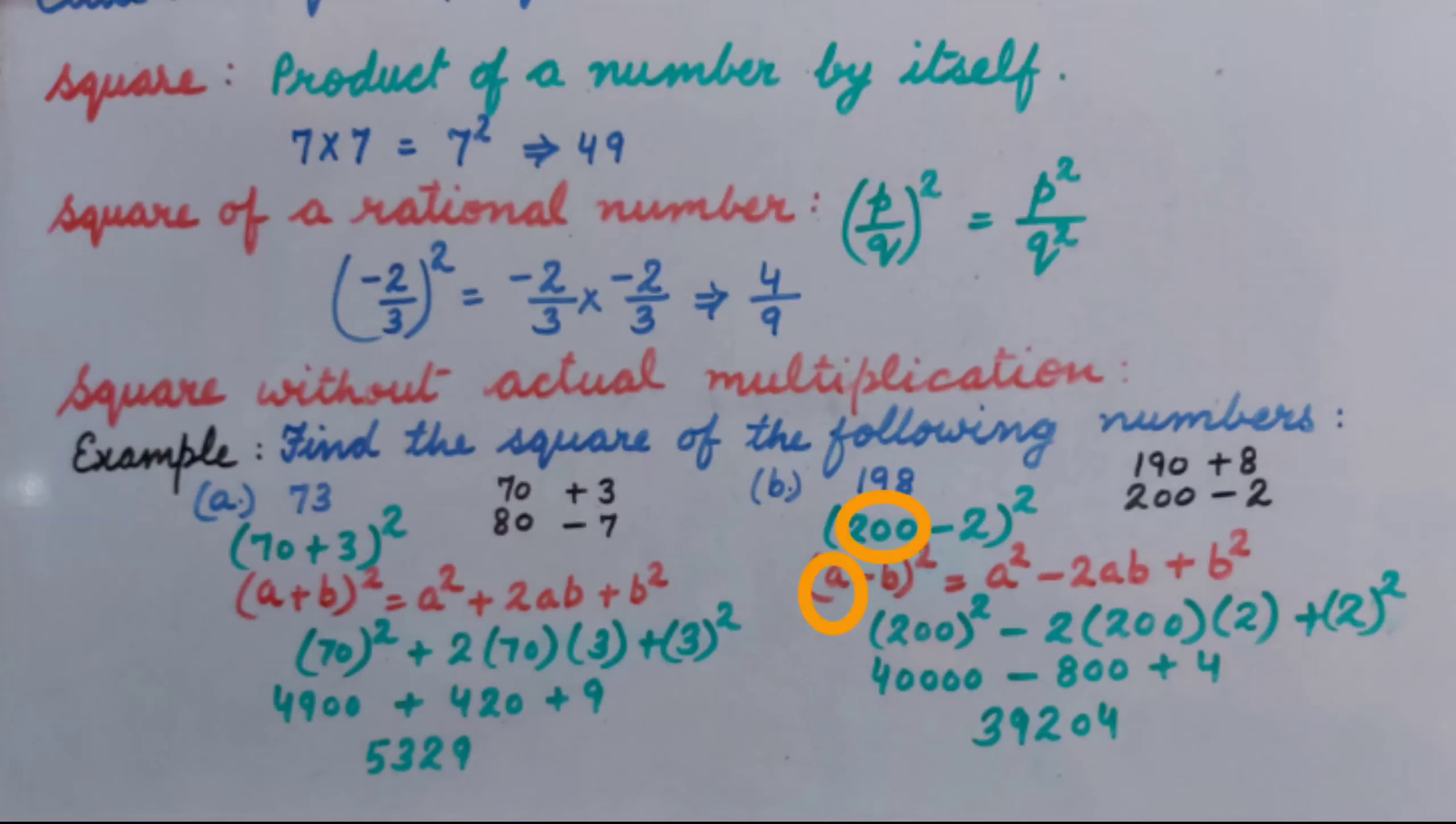A is 200. B, 2. Inserting the values of A and B, we get 200 square minus 2 multiplied by 200 multiplied by 2 plus 2 square.